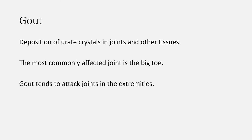Now let's move to gout. Gout is a disorder of purine metabolism characterized by hyperuricemia and the deposition of urate crystals in joints and other tissues, such as soft connective tissues or the urinary tract. The most commonly affected joint is the big toe. Gout tends to attack joints in the extremities because temperatures in the feet and hands can be low enough to precipitate urate from plasma. Thus, tophi typically form in the helix of the ear, fingertips, olecranon bursae, and other cool anatomical sites. The clinical features include mainly arthritis and tophi.